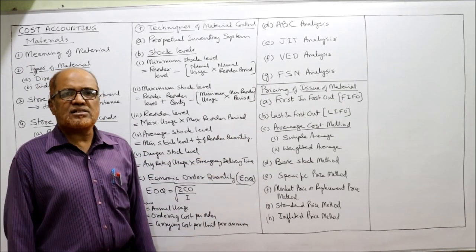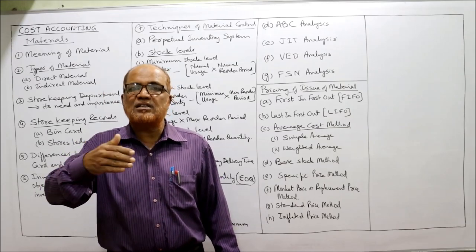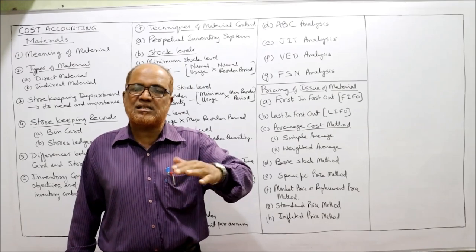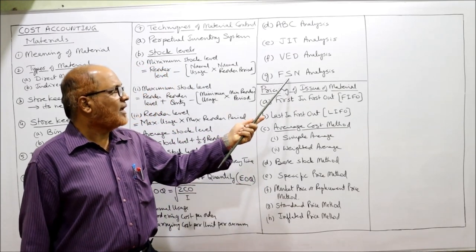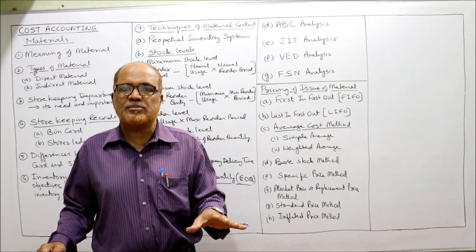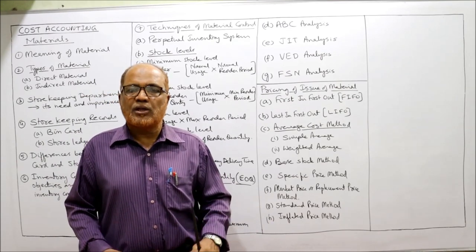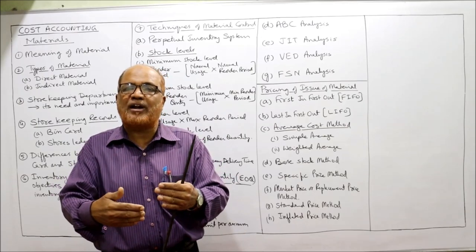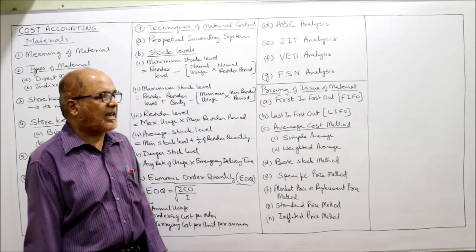FSN analysis classifies inventory according to speed or frequency of movement. F stands for fast-moving items — material with very high consumption speed. S stands for slow-moving items. N stands for normal-moving items. Inventory is classified into Fast, Slow, and Normal categories based on movement frequency.